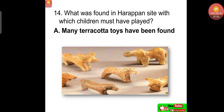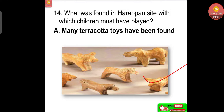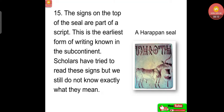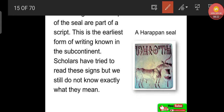Many terracotta toys have been found at Harappan sites, which children must have played with. Regarding seals: the signs on the top of the seal are part of a script — this is the earliest form of writing known in the subcontinent. Scholars have tried to read these signs but we still do not know exactly what they mean, as the script has not been decoded.